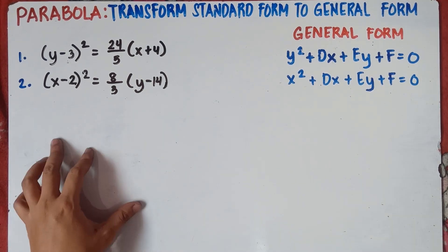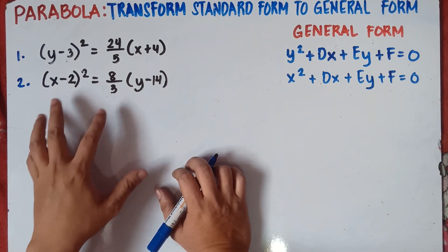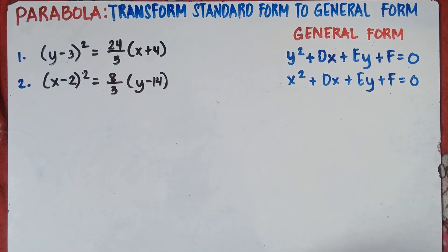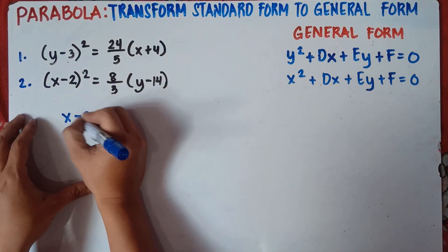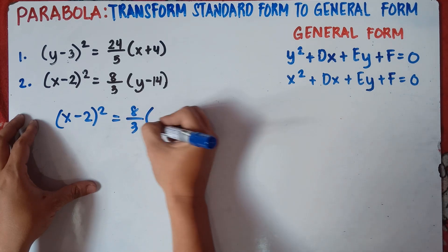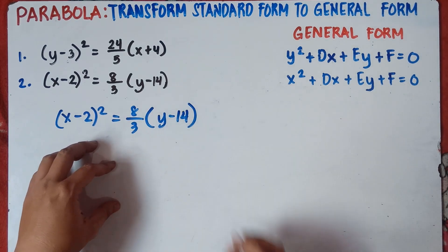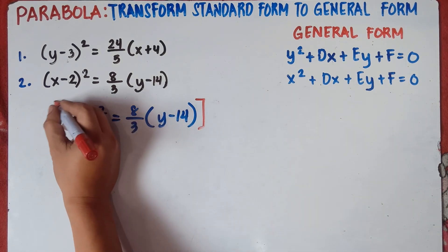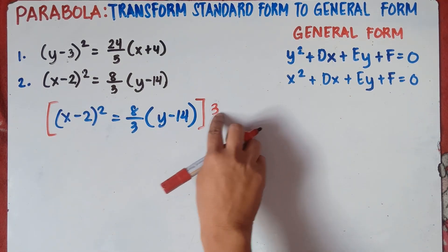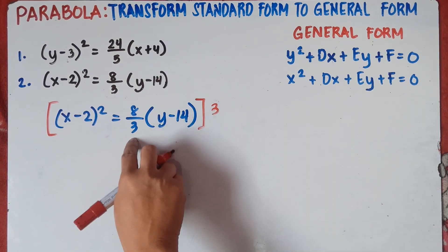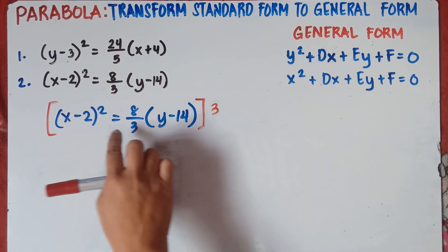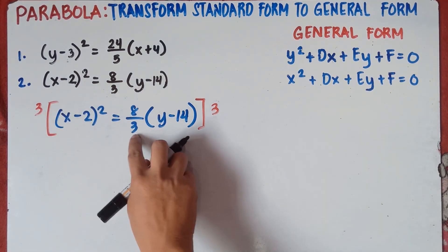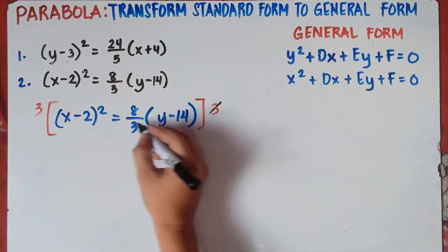Let's answer number 2 here in Part 3. When you're dealing with fractions, the thing you need to do is eliminate the denominator — you need to remove it so you can answer this one easily. So let me copy the equation: (x − 2)² = (8/3)(y − 14). To remove the denominator 3, we multiply both sides by 3. Because 3 divided by 3 is 1, you can simply remove the denominator.